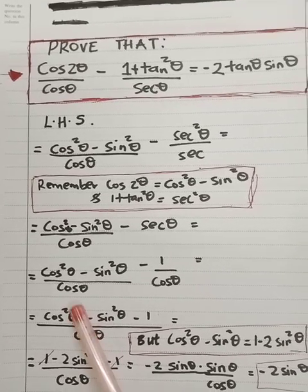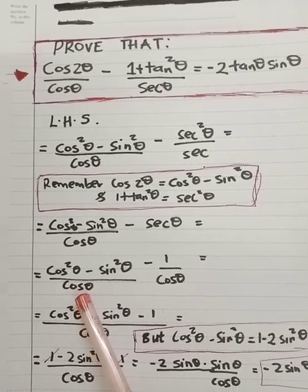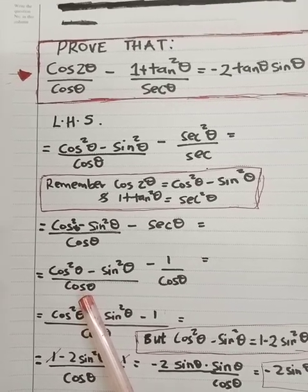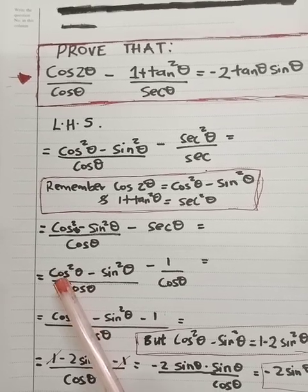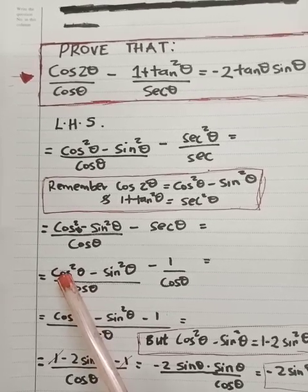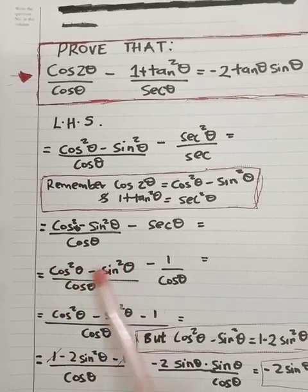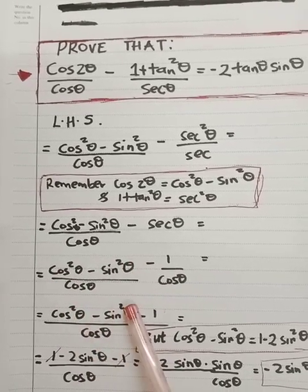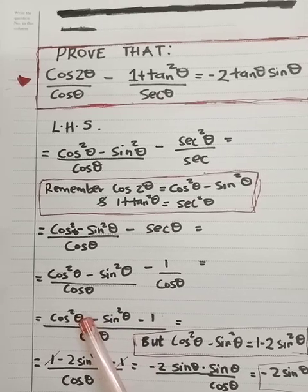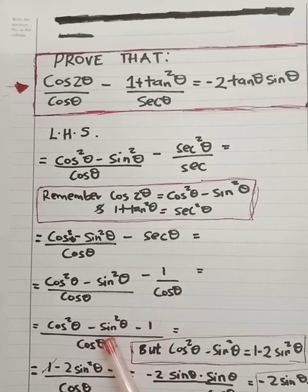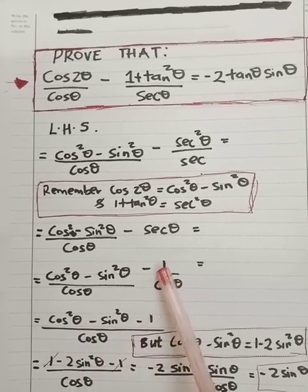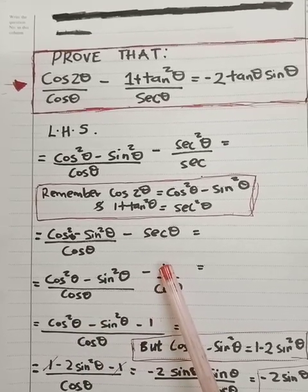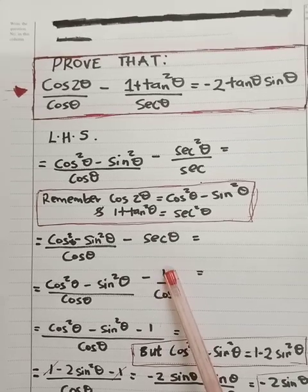If you divide cosθ divided by cosθ, you just get 1. Then if you multiply 1 by this, you just get this. Then cosθ again divided by cosθ is 1, and 1 times 1 is basically 1.